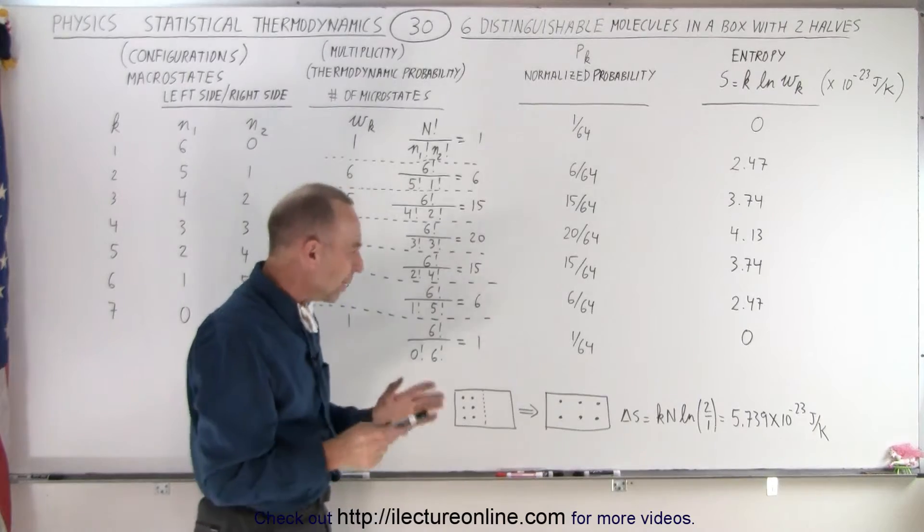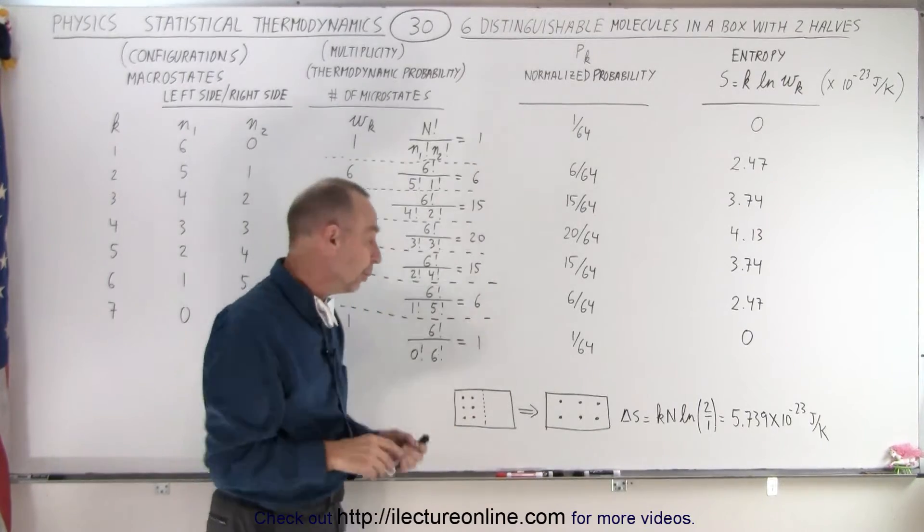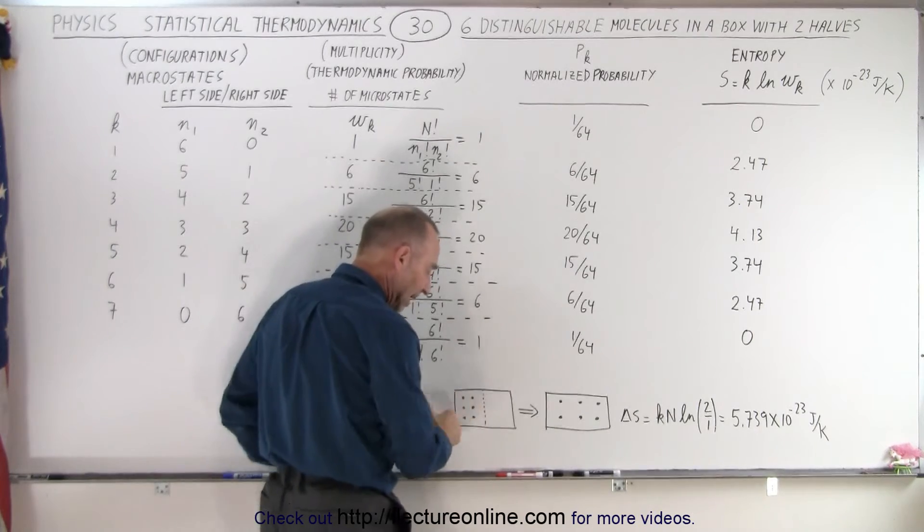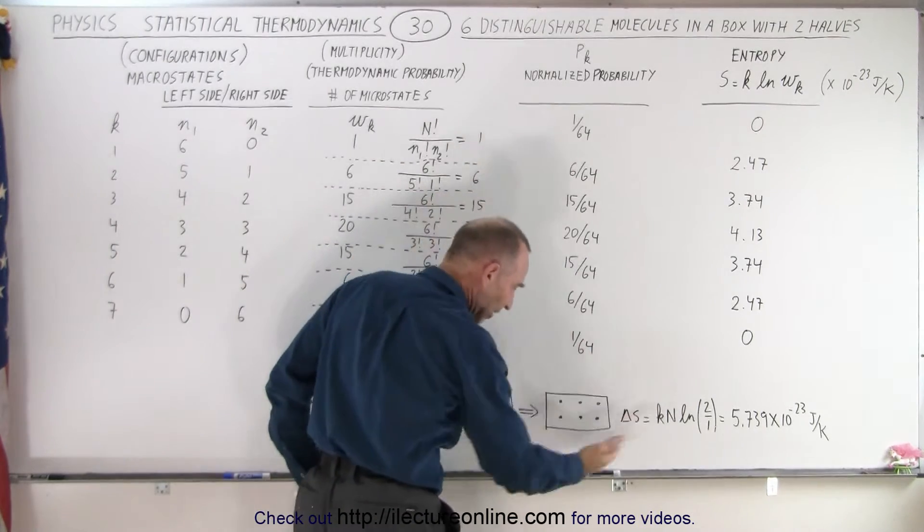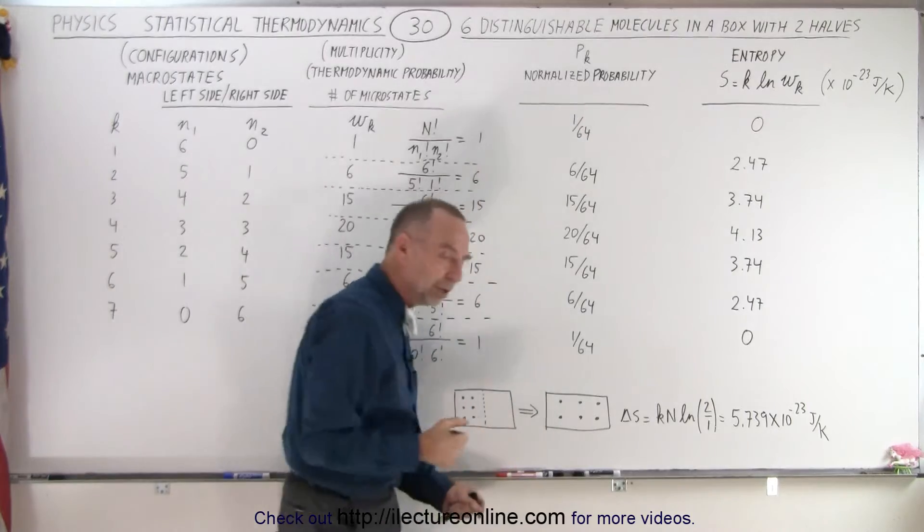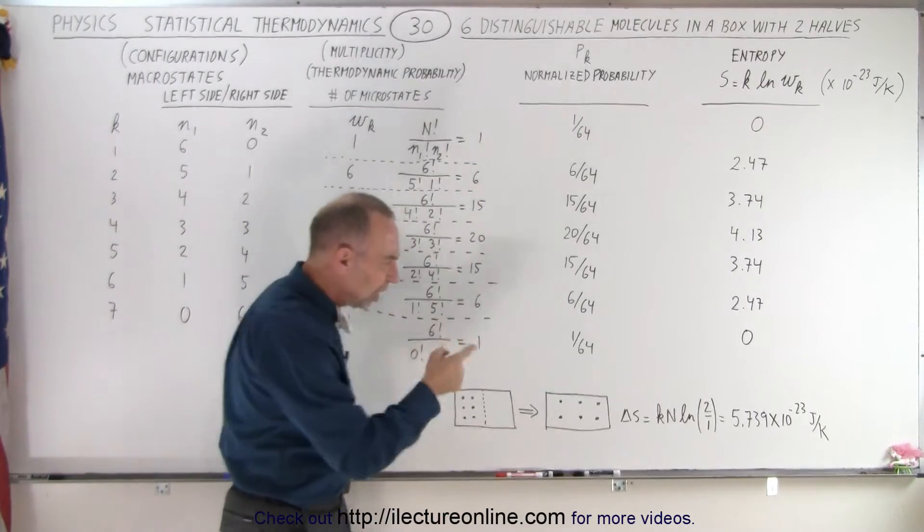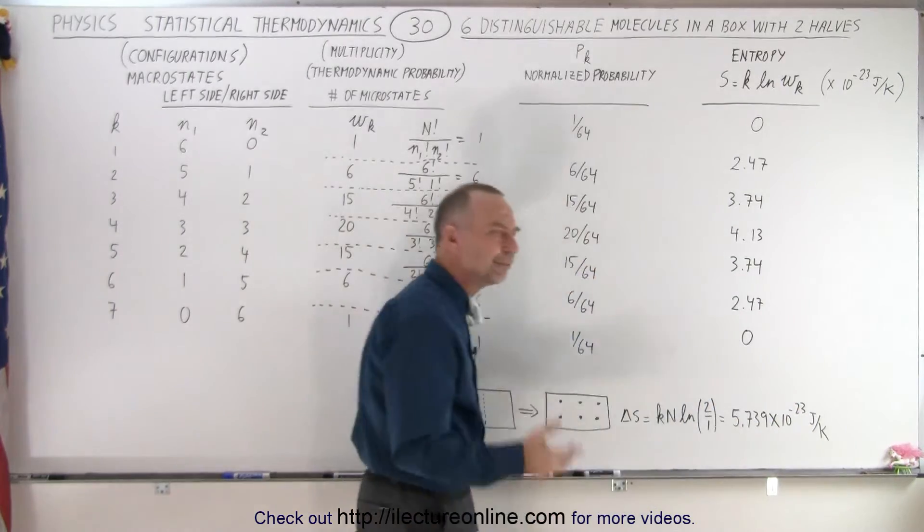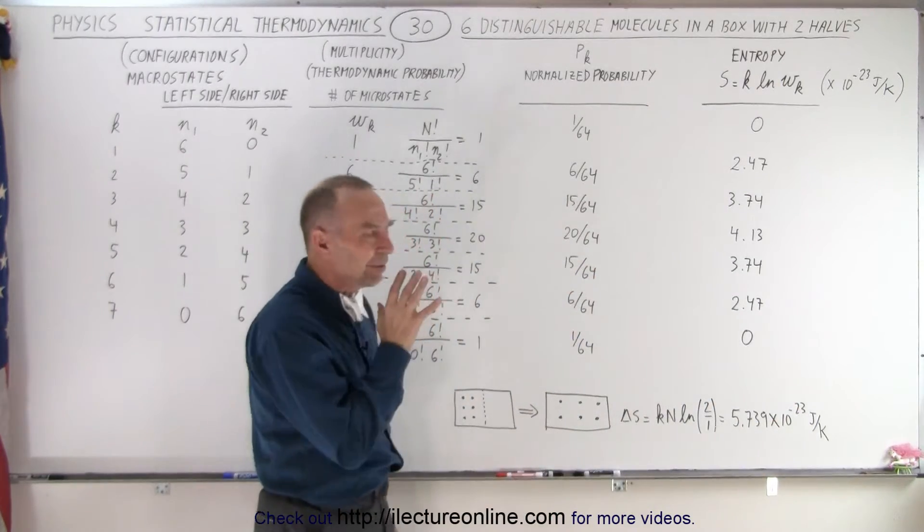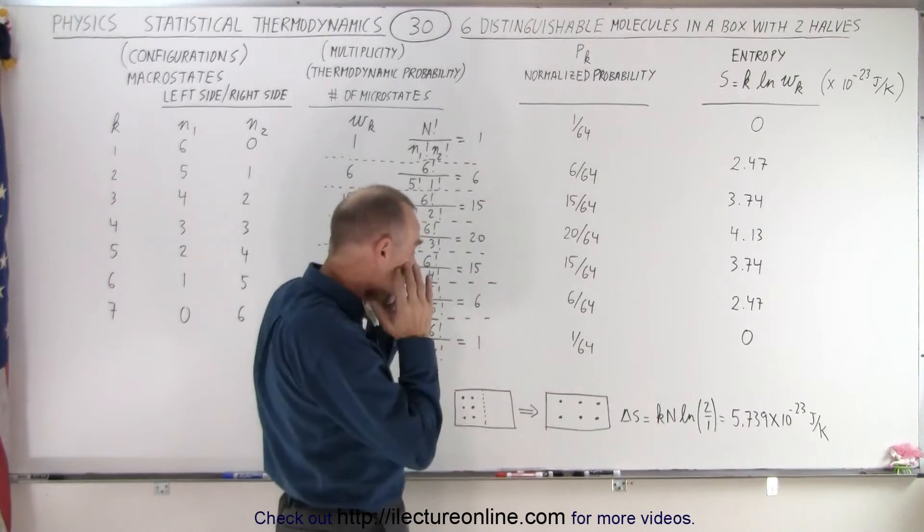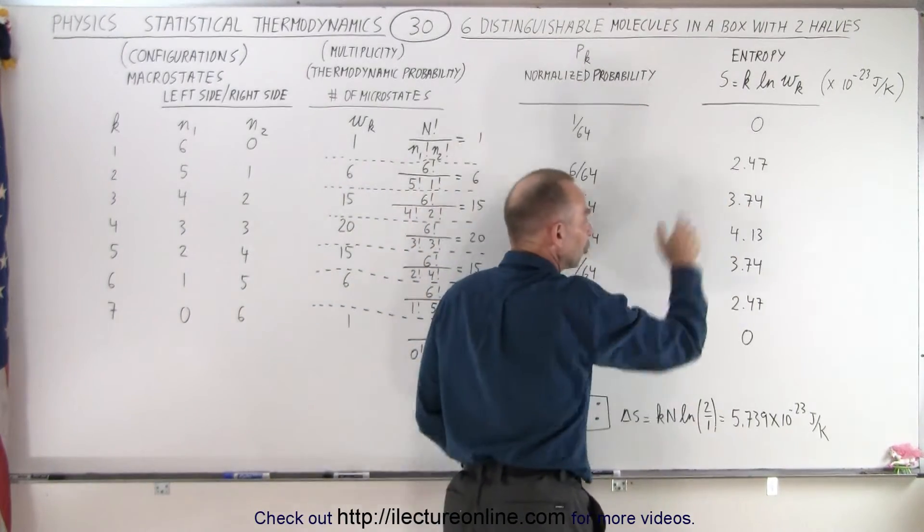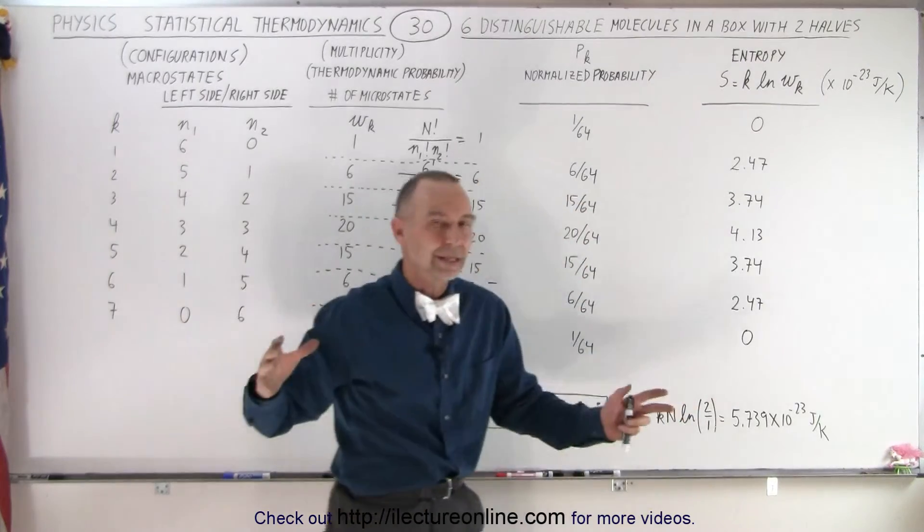But then you say, well wait a minute. On the previous video we had a situation where we had 6 molecules on one side of the box. And then you allow them to go anywhere inside the box so they're evenly distributed. And the change in entropy was equal to 5.739 times 10 to the minus 23 joules per Kelvin. And so you might erroneously think that, hey, shouldn't I have got the same number if I add all these entropies together? Shouldn't that represent the total entropy?